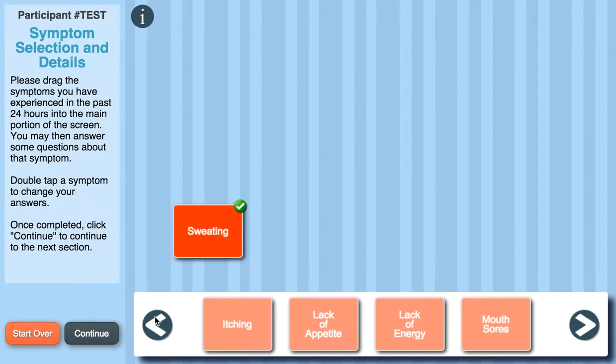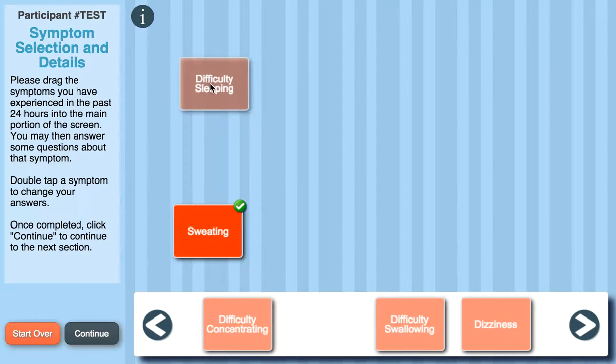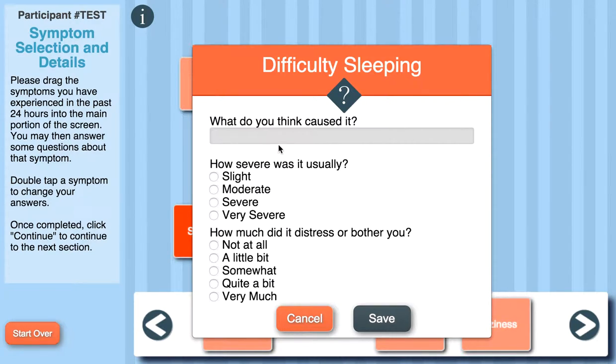And because I said difficulty sleeping has been causing my sweating, I'll go back until I find difficulty sleeping, where I'll then drag and drop that onto the stage as well. And I don't know what's been causing my difficulty sleeping, so I'll leave that blank, but it has been moderate and it has been distressing me a little bit.